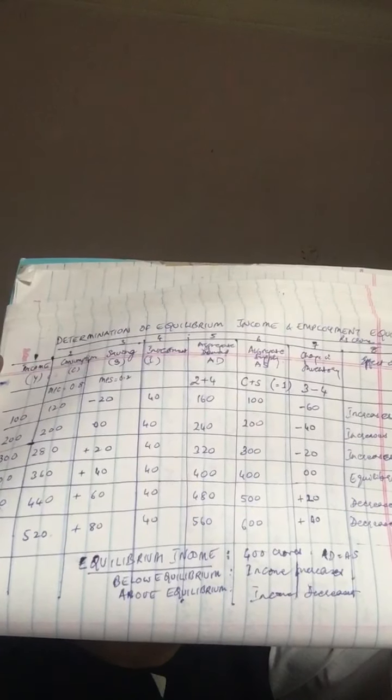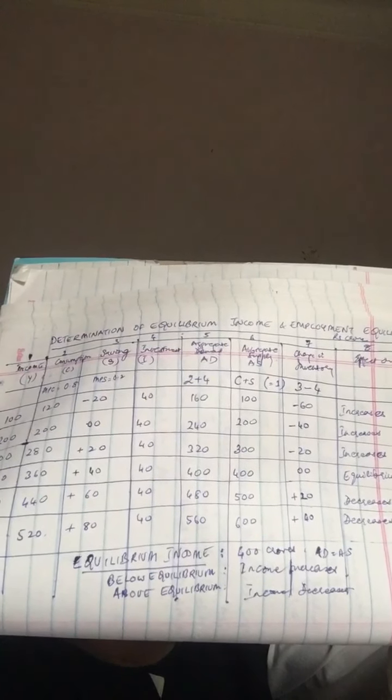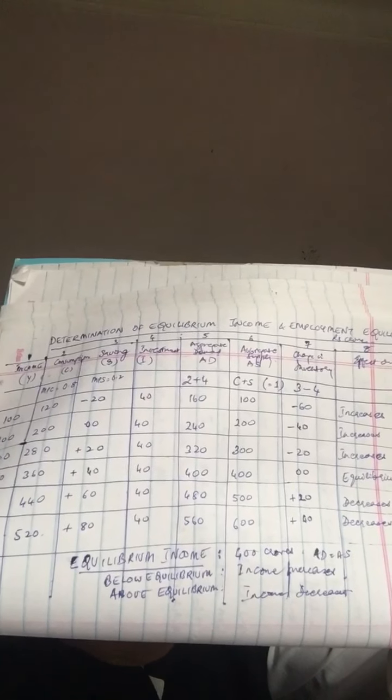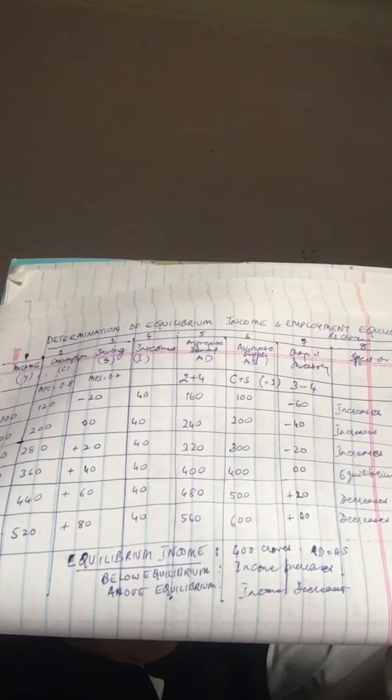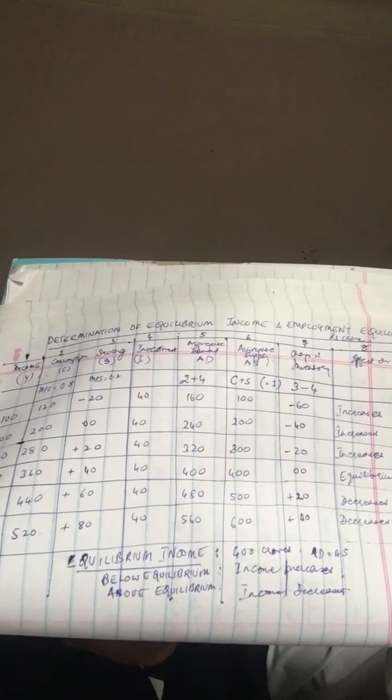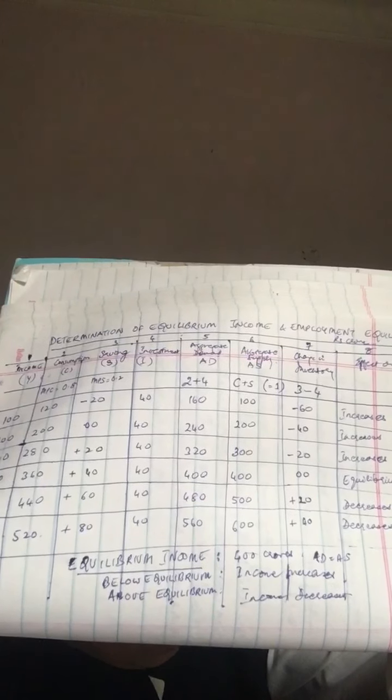Now look at the next one: income is 200, consumption is 200, so savings are nil, but the investment is 40. So aggregate demand is 240 and the aggregate supply is 200, so effect on income - it will increase.